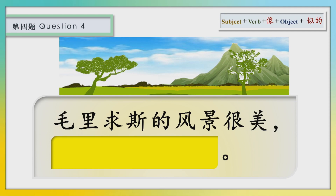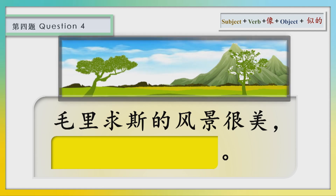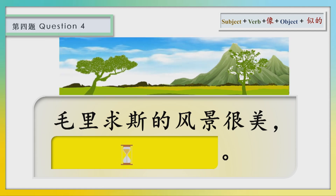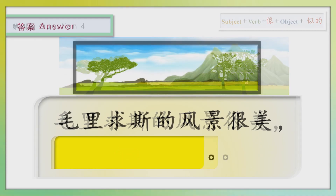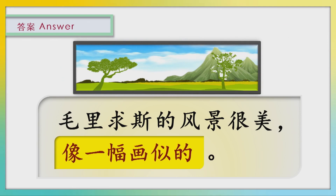The fourth question: The atmosphere is very beautiful. 答案：毛里球丝的风景很美，像一幅画似的。